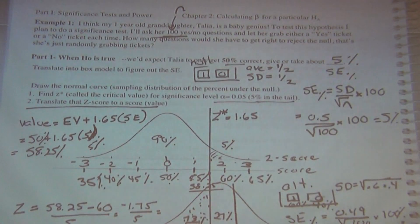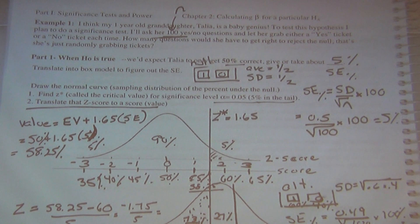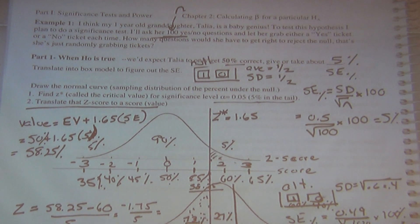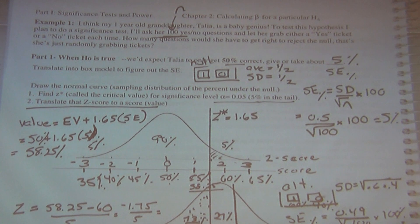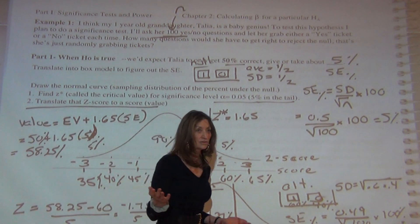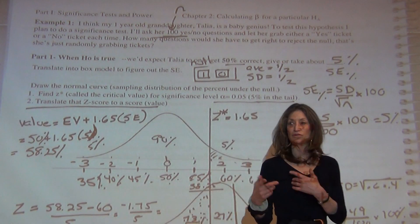So just to review — raise your hand if you weren't here last time. This will help everybody though. Where we're at: we're doing these significance tests. All significance tests are done to see if some effect we observe is real, or just due to the luck of the draw — whether we have a real effect or something just due to chance.